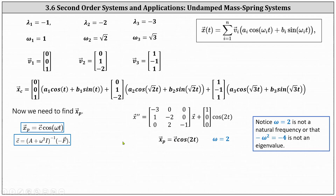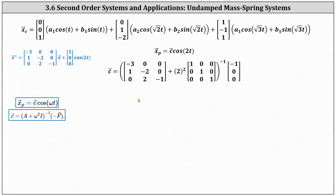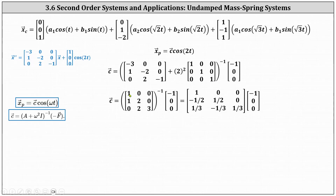The next step is to determine the constant vector c using the formula shown. This gives vector c equal to the inverse of (A plus omega squared times the three-by-three identity matrix), times the opposite of vector f. Here vector f is the vector one, zero, zero, so negative vector f is the vector negative one, zero, zero. Simplifying inside the parentheses, we need the inverse of the three-by-three matrix with entries one, zero, zero in the first row; one, two, zero in the second row; and zero, two, three in the third row, times the vector negative one, zero, zero.